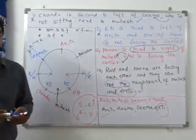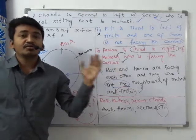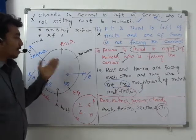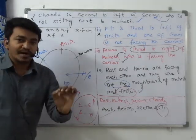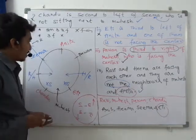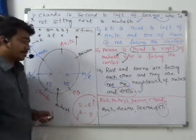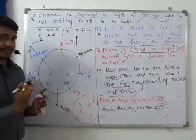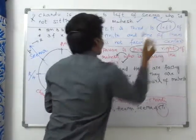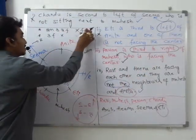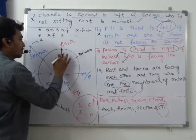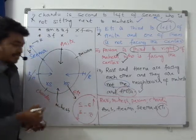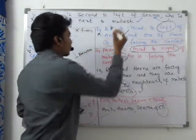Now we revisit clue two: Iti is third to the left of Anita, and one of them is not facing the center. We know the positions of both Iti and Anita. If Anita is not facing the center, then Iti becomes first right, second right, third right — but the clue says third left, not right. So Anita must be facing the center. Since one of them is not facing the center, it must be Iti — so Iti is not facing the center.